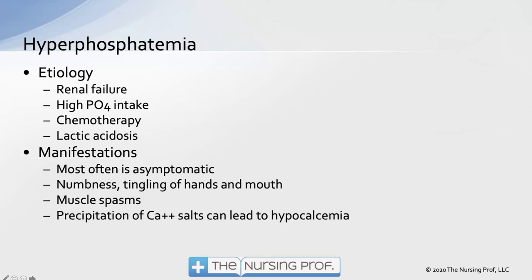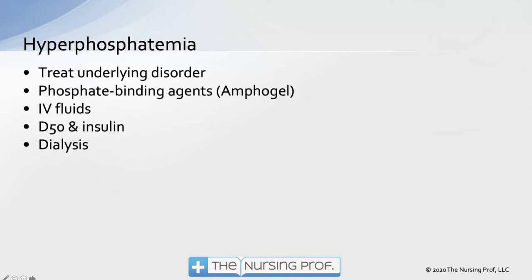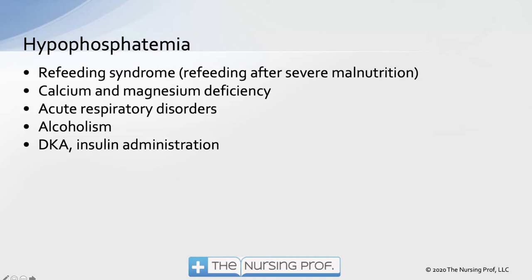Hyperphosphatemia is almost always due to renal failure, though extremely high phosphate intake (such as excessive soda consumption) is a rare cause. It is most often asymptomatic — the clinical problems seen are actually related to the resulting low calcium level. Treatment includes addressing the underlying disorder (usually renal failure), phosphate-binding agents such as amphogel, IV fluids to flush it out, D50 and insulin to shift phosphate into storage, and dialysis.